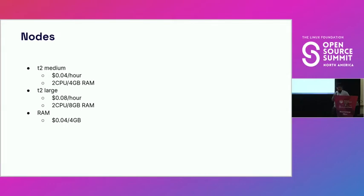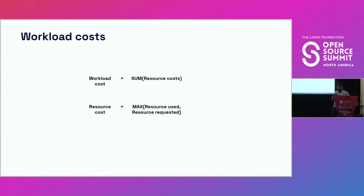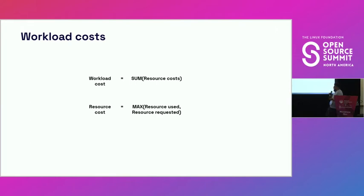Now that we are speaking the same language between resource costs of nodes and workload costs, we can express workload costs as just the sum of all the resources that workload allocates. When I say allocates, I mean it's the maximum of the actual utilization and the requests. The reason it's important to do it this way in Kubernetes is because when you request a set of resources, the scheduler will block out space so nothing else can run in that space — so you should effectively be charged for it. And when your usage exceeds requests, you're subject to eviction, so you get charged for the full amount that you use.